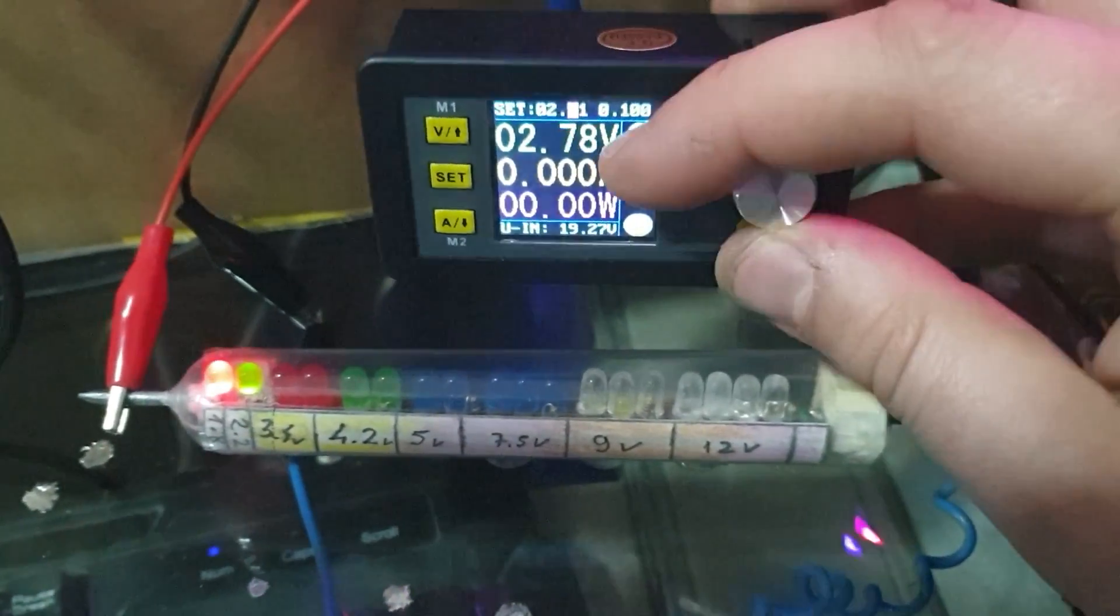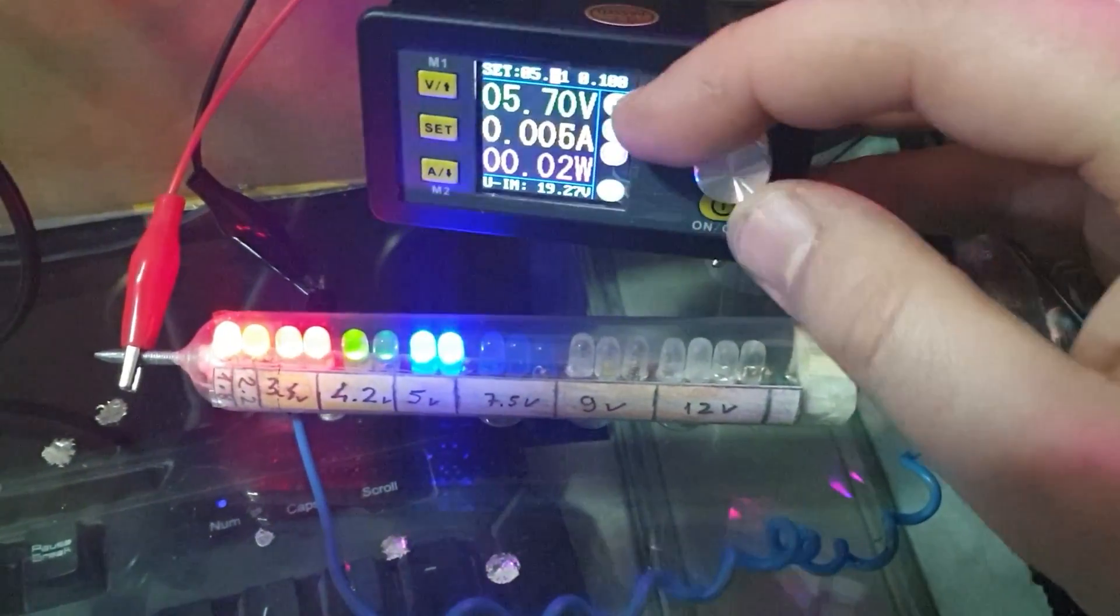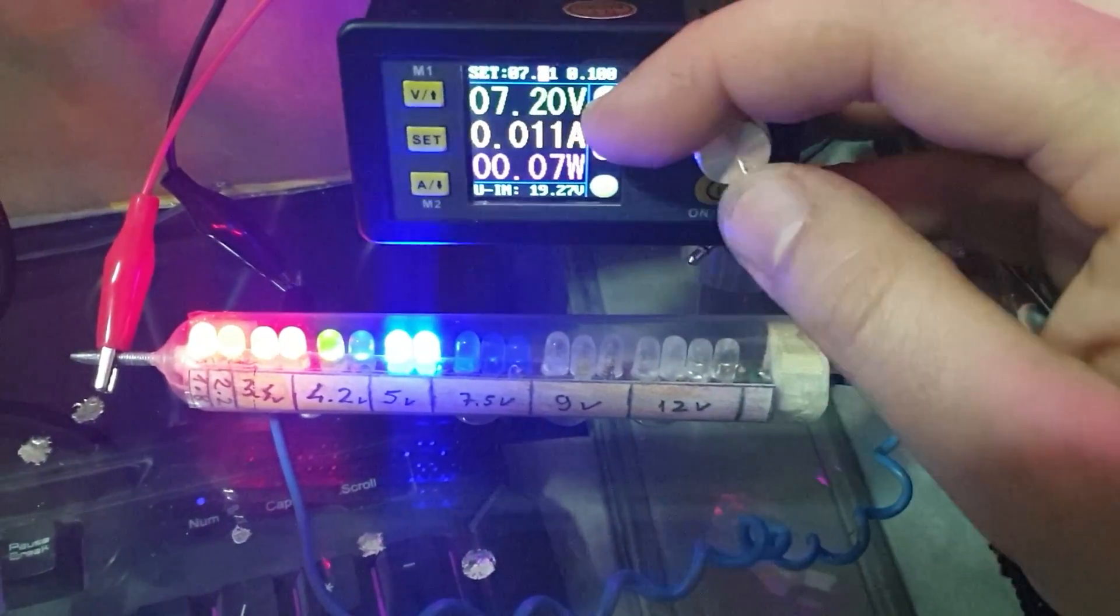To show an even better example, here I hook up my LED voltmeter on a digital adjustable power supply and increase the voltage from 1.8V up to 15V.